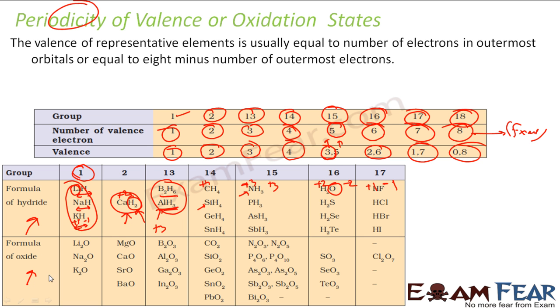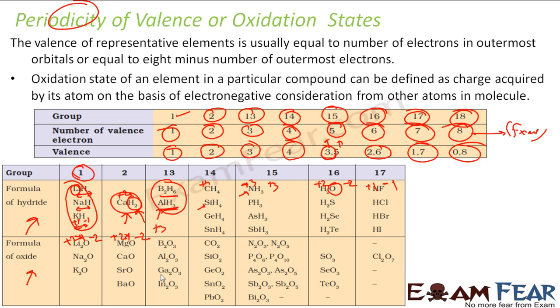Also, formula of oxides we can find. For example, lithium has plus 1, but oxygen has minus 2, so I need 2 lithium. Similarly, oxygen has minus 2, so magnesium with plus 2, I need only 1. So like that we can find the formula of hydrides and oxides based on the oxidation state. Let me reiterate, oxidation state of an element in a particular compound can be defined as charge acquired by its atom on the basis of electronegativity consideration from other atoms in the molecules.